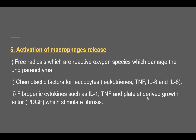Certain particles activate macrophages. The macrophages release free radicals — reactive oxygen species — which damage the lung parenchyma. They can also release chemotactic factors and fibrogenic cytokines, which stimulate fibrosis. So macrophage activation leads to both parenchymal damage and fibrosis. This is the pathogenesis of pneumoconiosis.